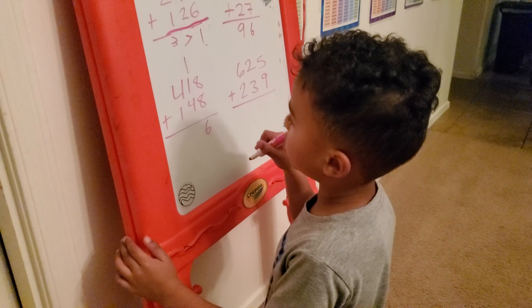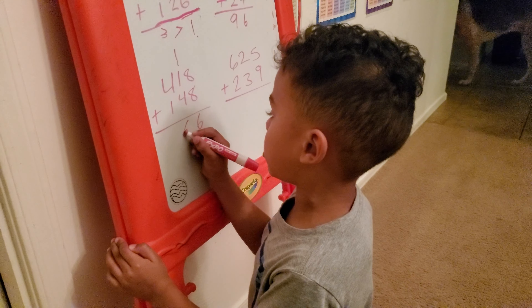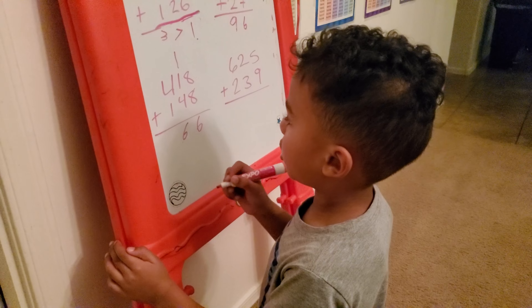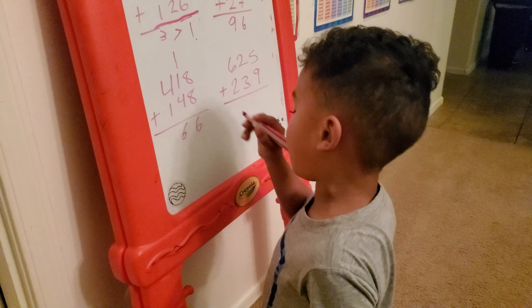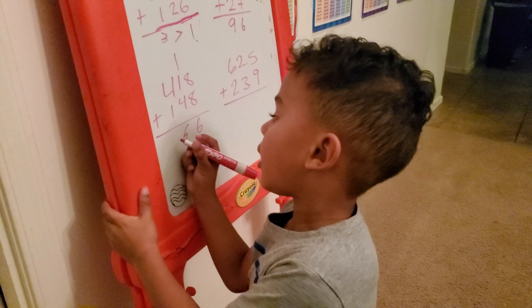It is 16. So you put a 6, and the 1 above a 1. Good job. And then you do 1 plus 1 plus 4. I know it. 4 plus 1 plus 1 is 6. And then you put 6. And then you do 4 plus 1 is 5. And then you got 566.